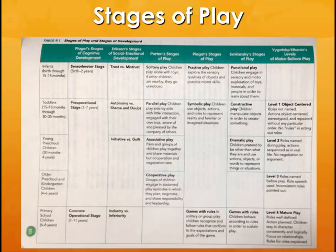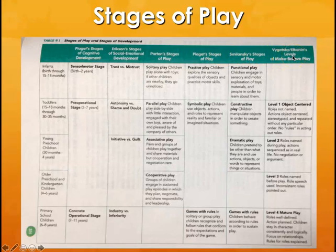For the stages of play, not all children enact the same types of play at the same time or are able to engage in the same types at the same age or level of development. This table comes from Feeney, Moravik, and Nolte's book, 'Who Am I in the Lives of Children,' 10th edition, 2016. It gives us a good view of where children are by age and the different stages identified by various authors and researchers from their theoretical frameworks.